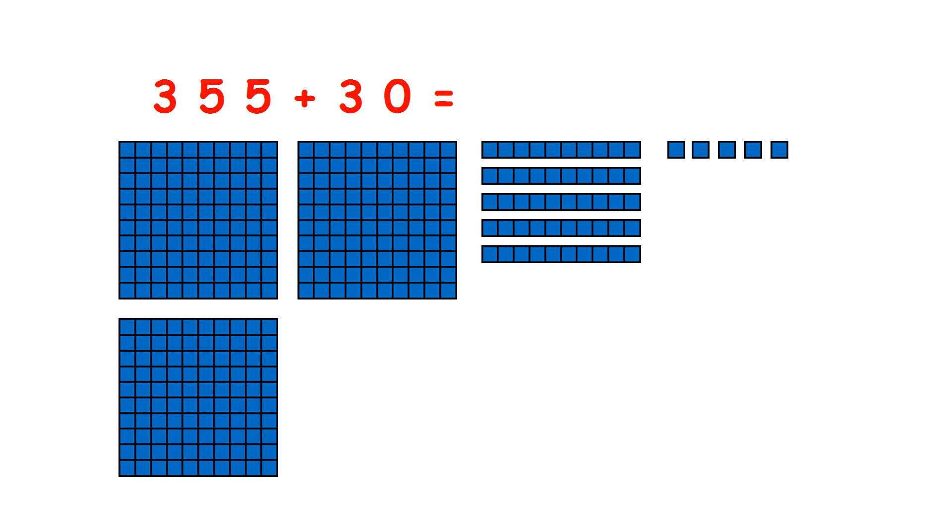We can add a multiple of 10 to a three-digit number mentally without needing a number line. So we have 355 and we're adding 30, which means we have five tens and we're adding three tens.